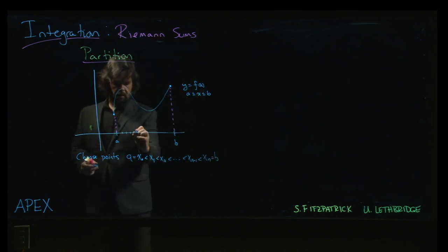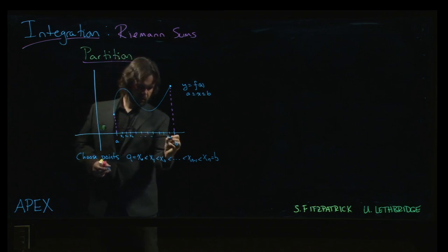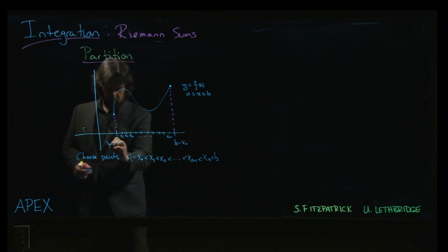So we get these intermediate points x1, x2, x3, and so on down to xn minus 1. b is xn, a is x0.